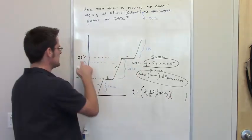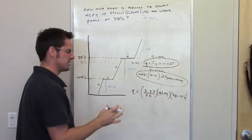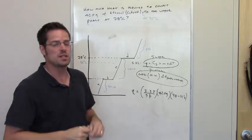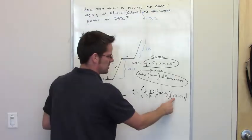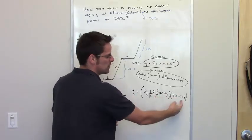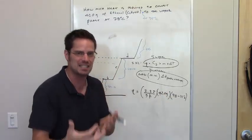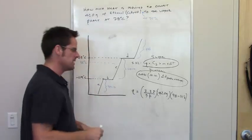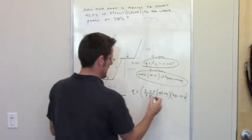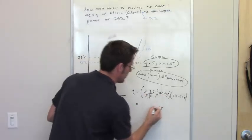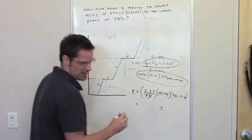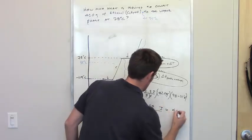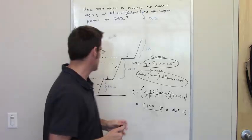Delta T is 78 minus 35 degrees Celsius. You don't need to convert to Kelvin because the difference between two temperatures is identical in Celsius and Kelvin — adding 273.15 to both cancels out. So Kelvin and Celsius cancel, grams cancel, and the result is 4,154 joules, or 4.15 kilojoules for three significant figures.